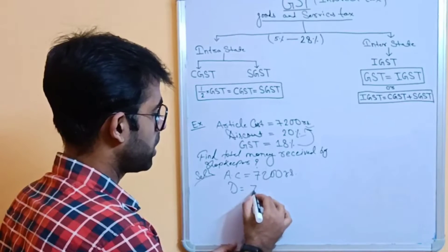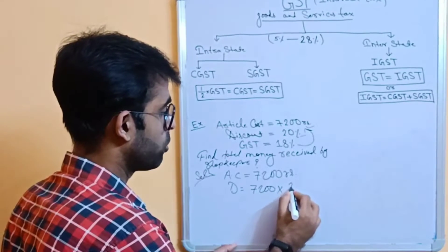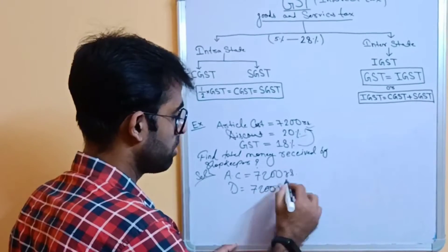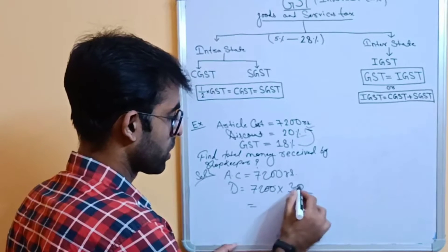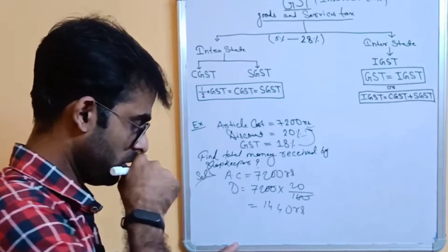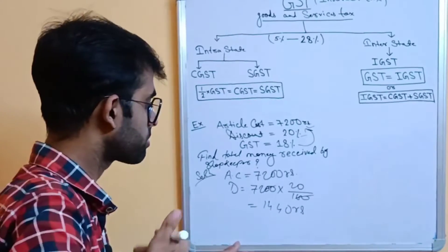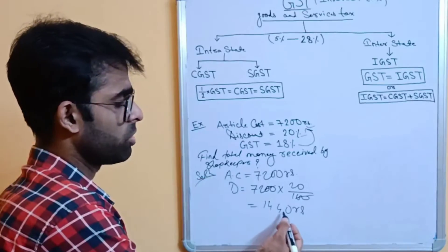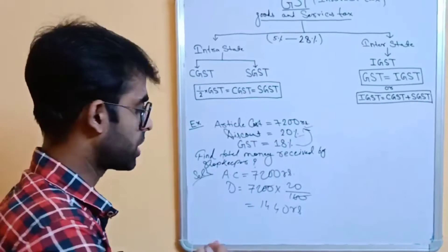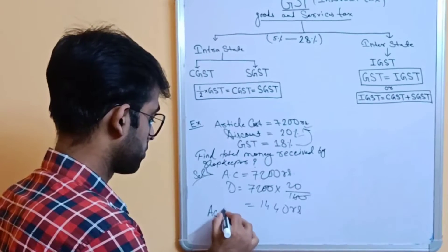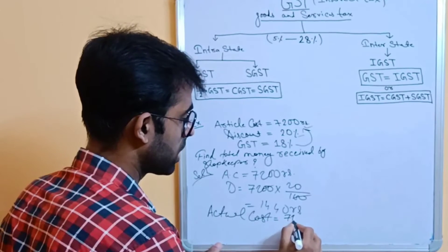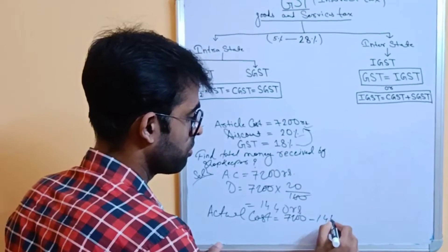AC stands for article cost which is given 7200 rupees. I think everything is visible to all of you. And discount is given 20% of what? 20% of this amount, 7200 rupees. So, just find out the discounted amount. If we calculate 20% of 7200 rupees, we get 1440 rupees.